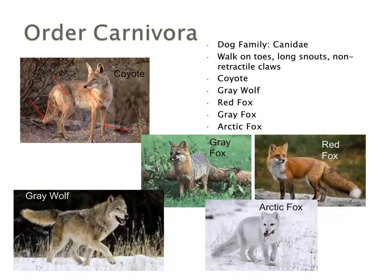The Canidae family — the dog family — includes many different species: the coyote, the gray fox, the red fox, the gray wolf, and the arctic fox. All share very common dog-like features in terms of their anatomy and behavior.